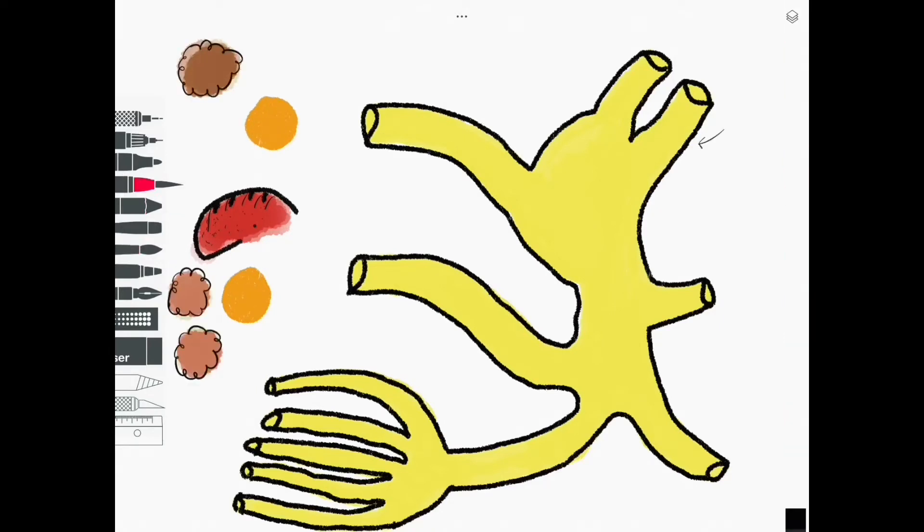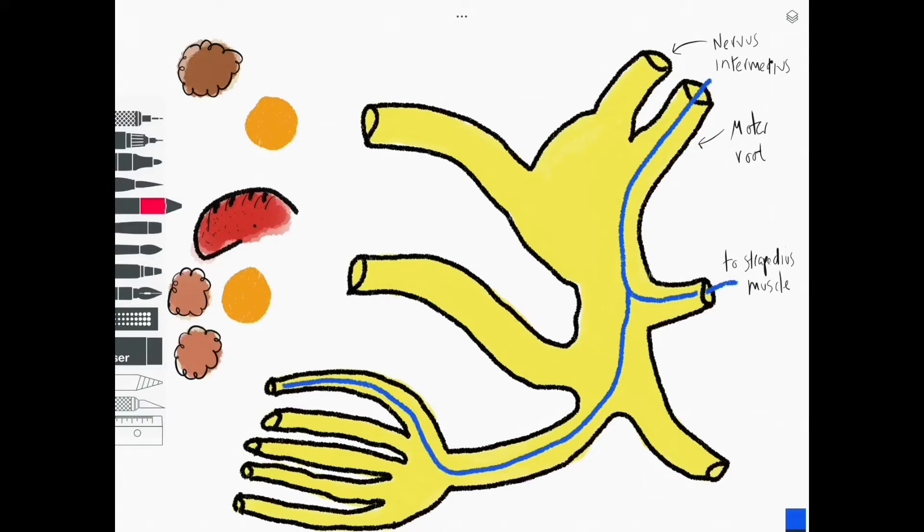So now we can see the motor root coming on with nervous intermedius. Let's begin by talking about those motor fibers. These neurons course through the motor root, pass through the geniculate ganglion. Shortly after, a small branch is given off to the stapedius muscle in the ear, which is the smallest muscle in the human body. The bulk of the motor fibers continue and exit via a small hole in the skull called the stylomastoid foramen and pass through the parotid gland where they divide into individual branches which innervate the muscles of facial expression.